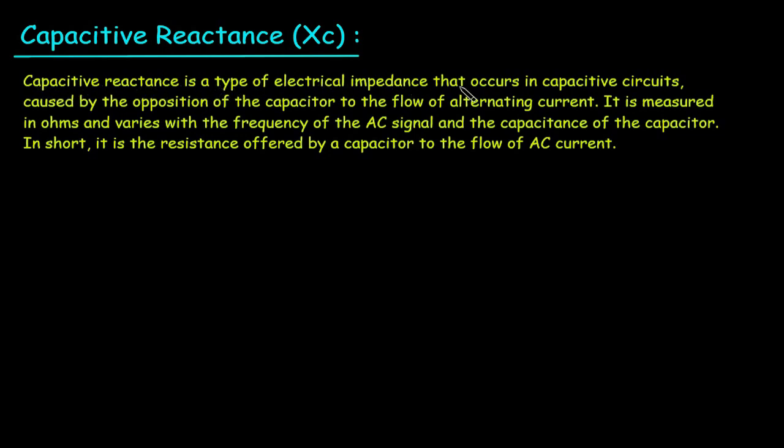Capacitive reactance is a type of electrical impedance that occurs in capacitive circuits, caused by the opposition of the capacitor to the flow of alternating current. It is measured in ohms and varies with the frequency of the AC signal and the capacitance of the capacitor.